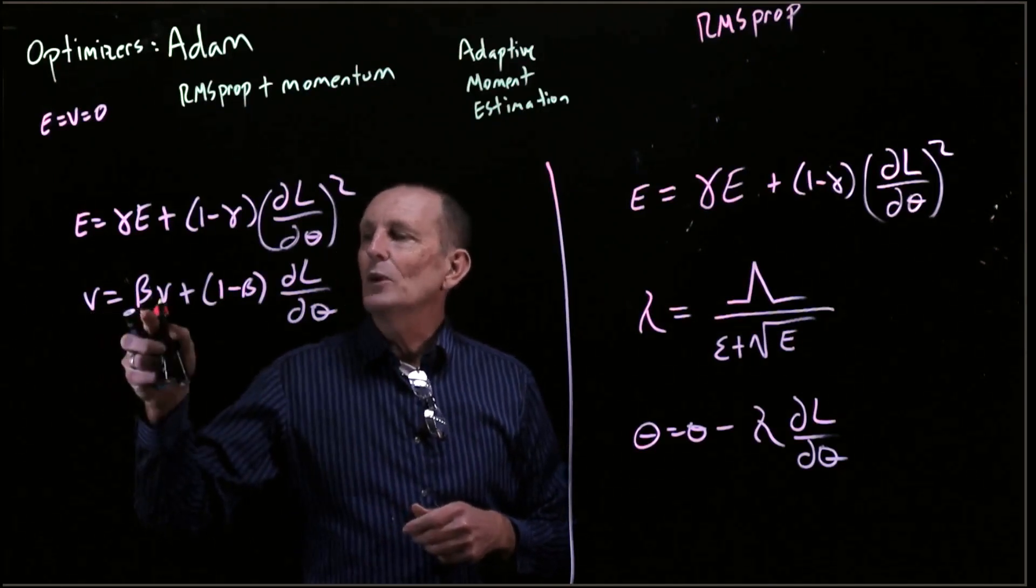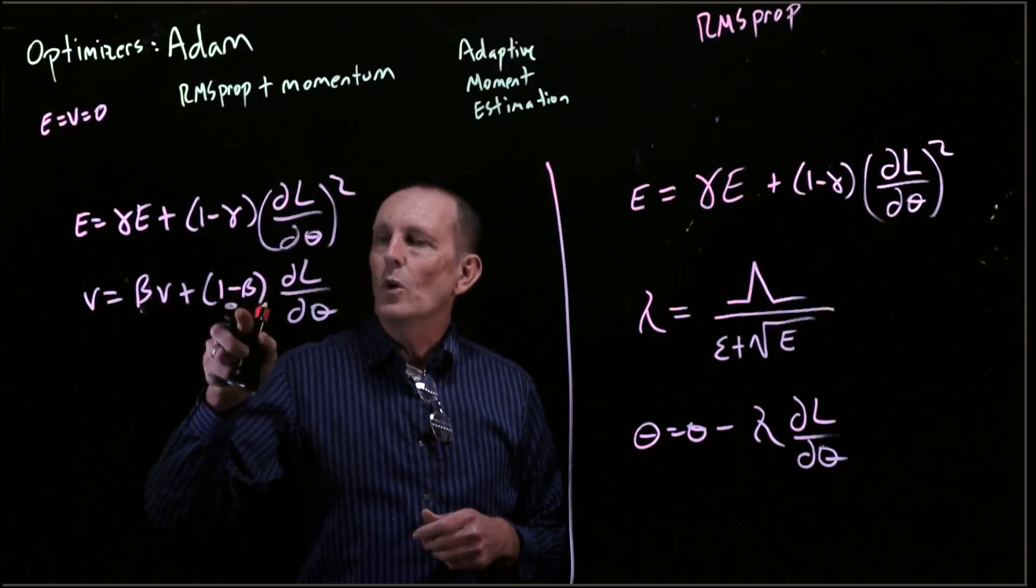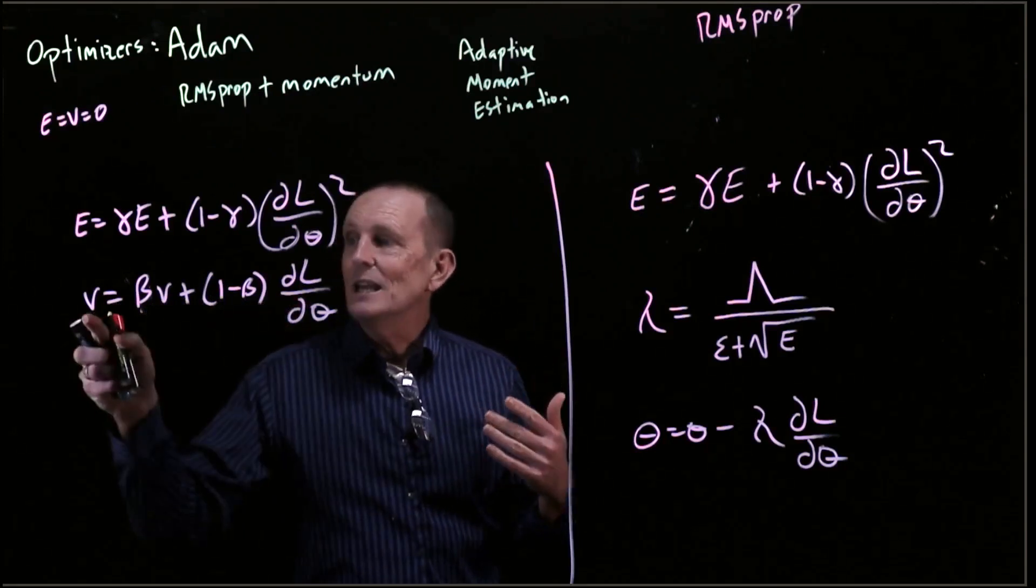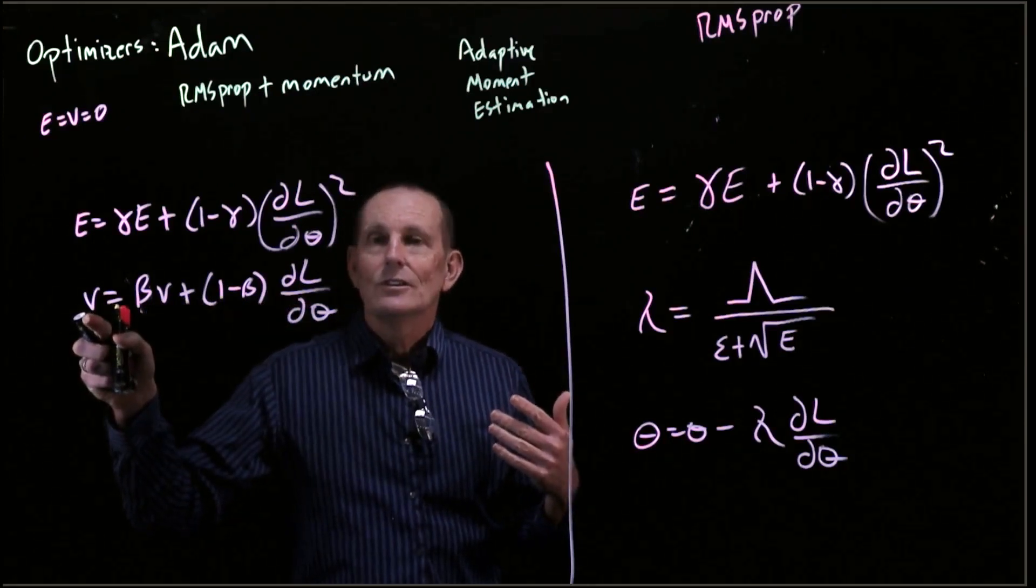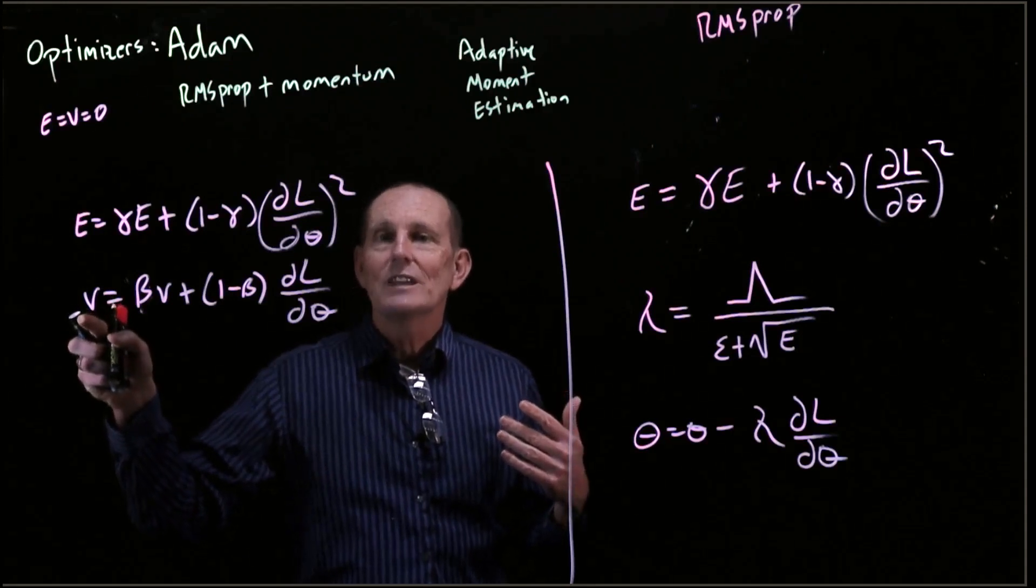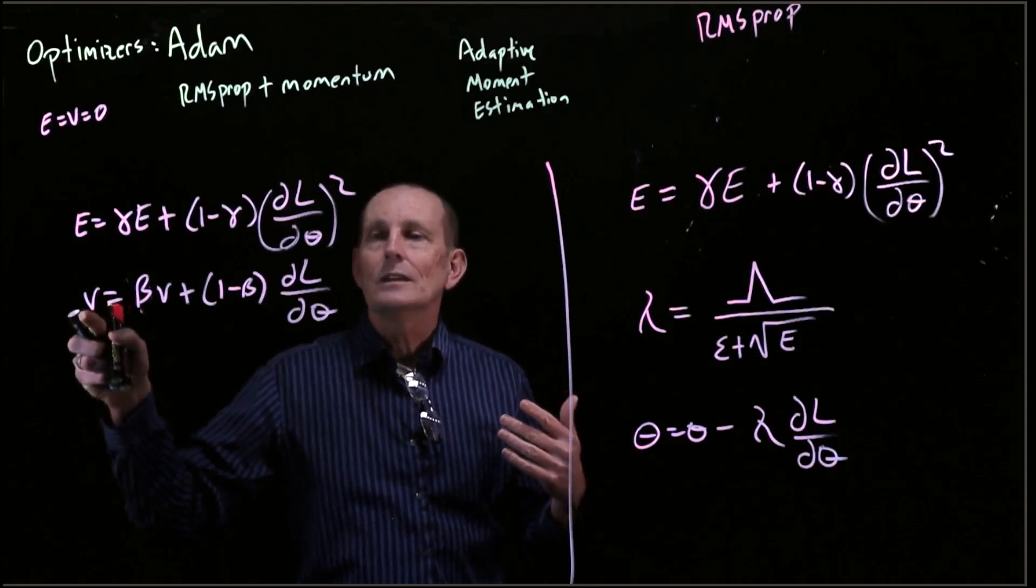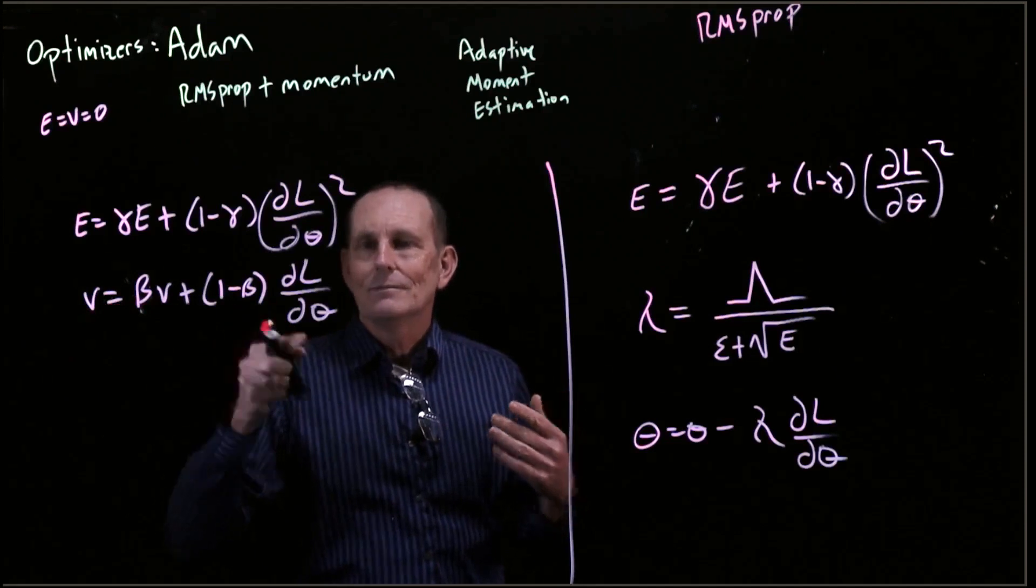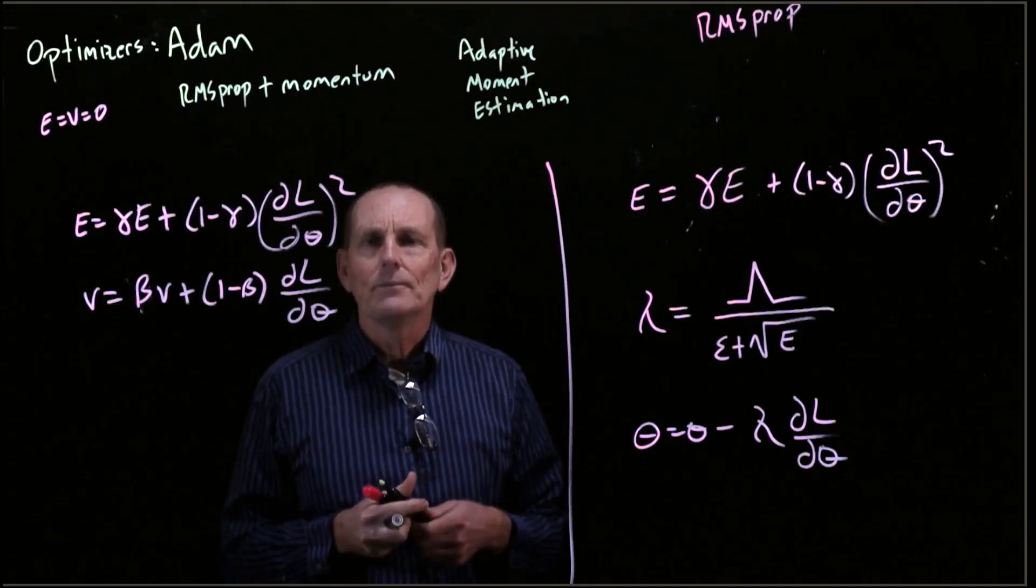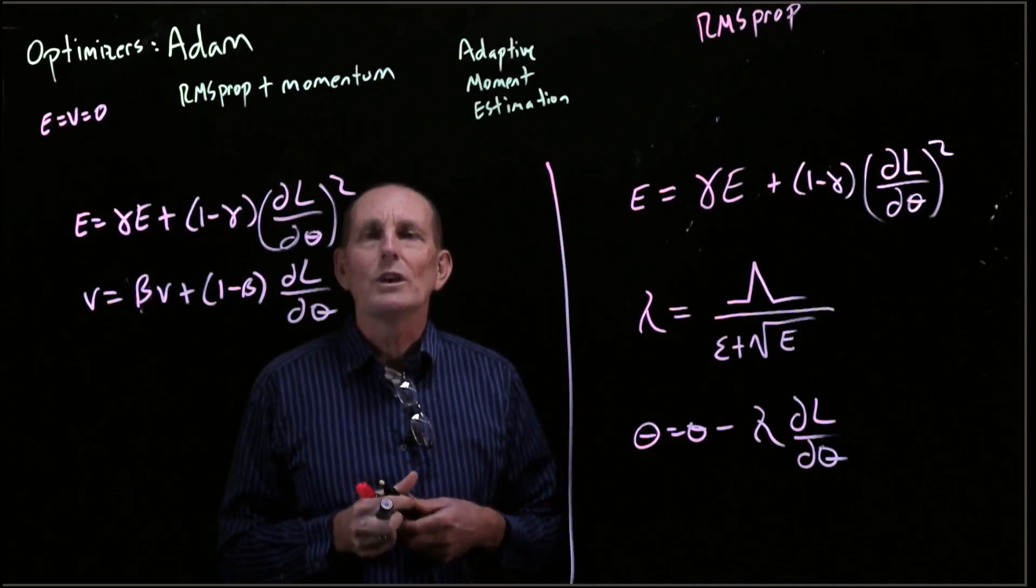Then we have 0.9 times 0 plus 0.1 times our current gradient. So our estimation, our exponential moving average, which is estimating our gradient, is actually down by a factor of 0.1. It's 0.1 of what it should be.